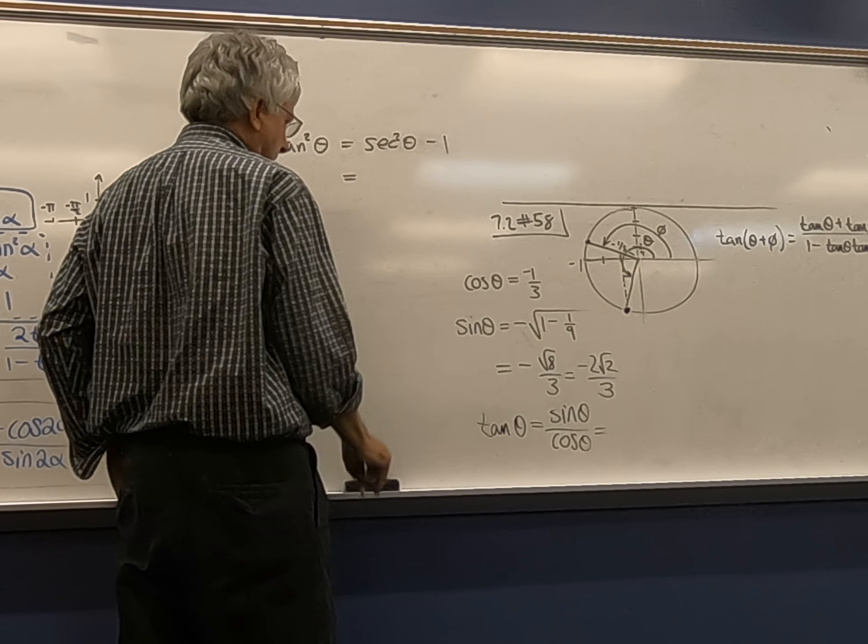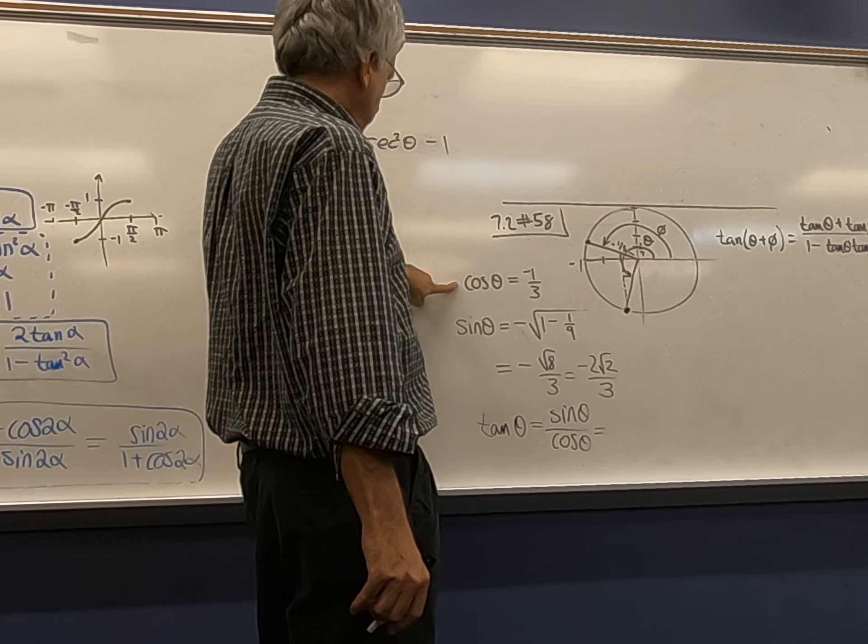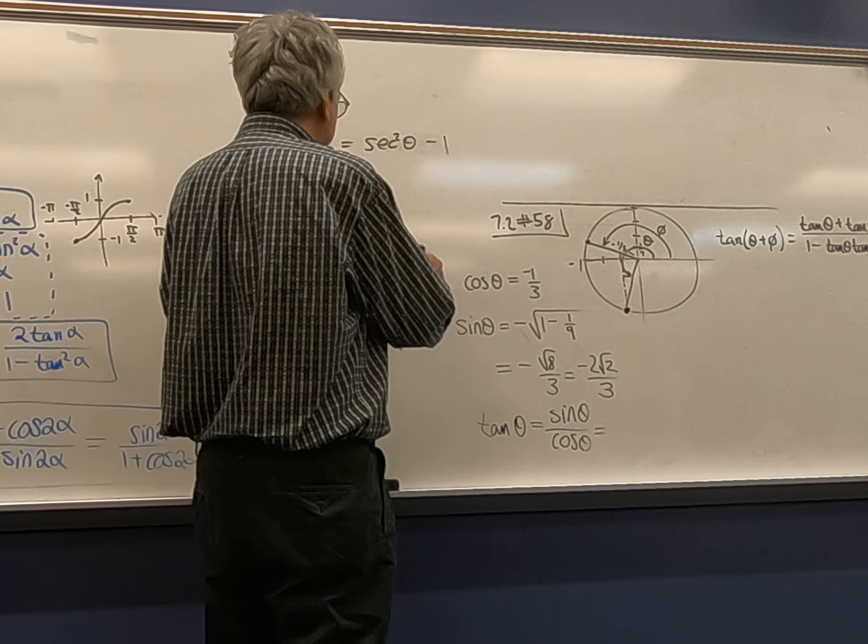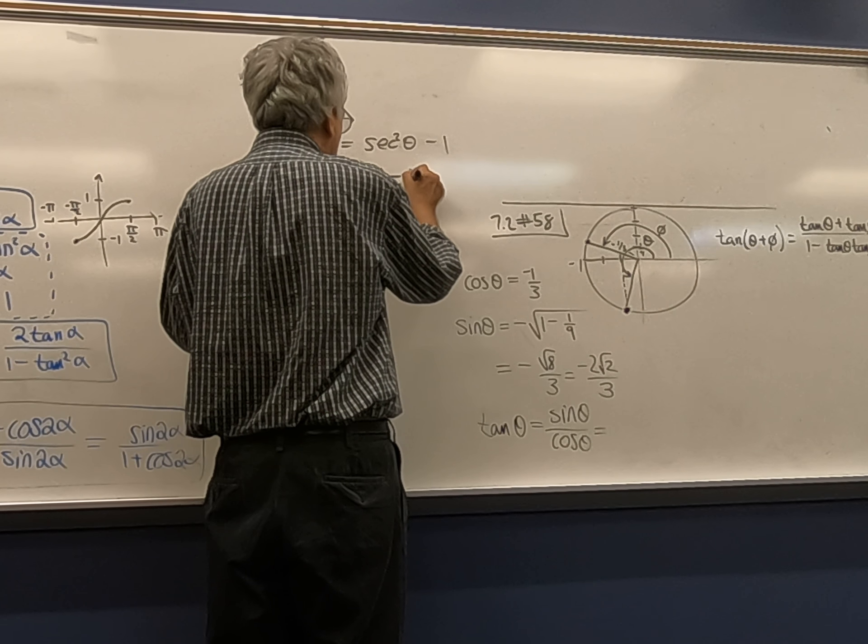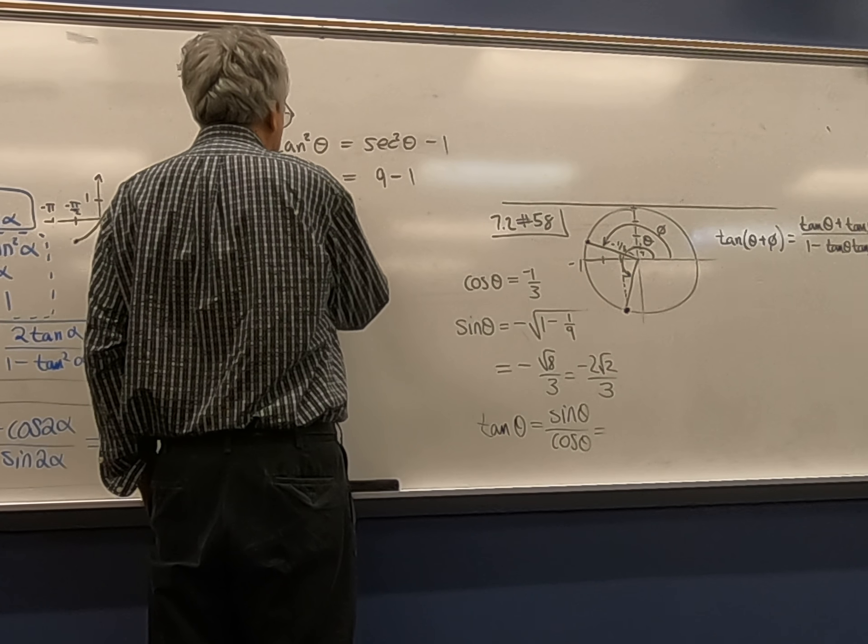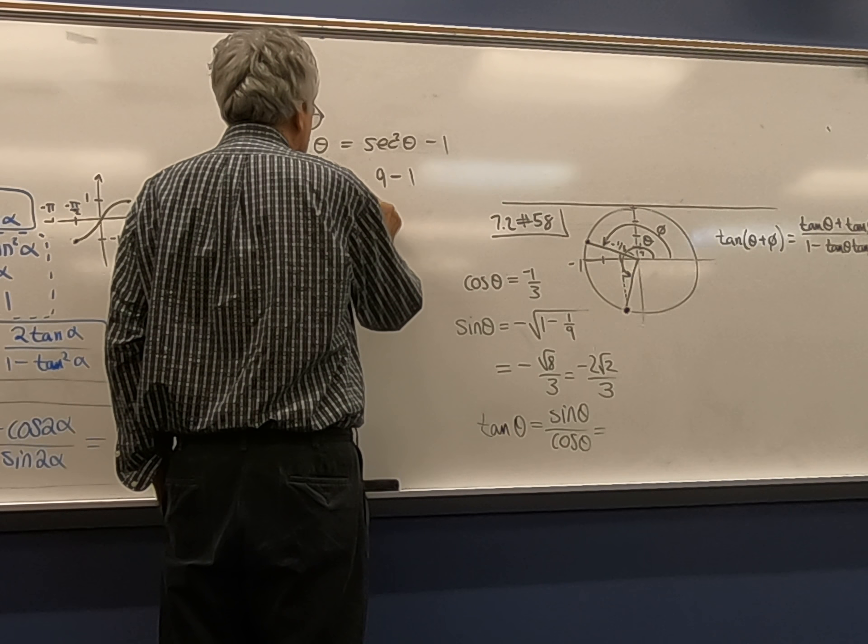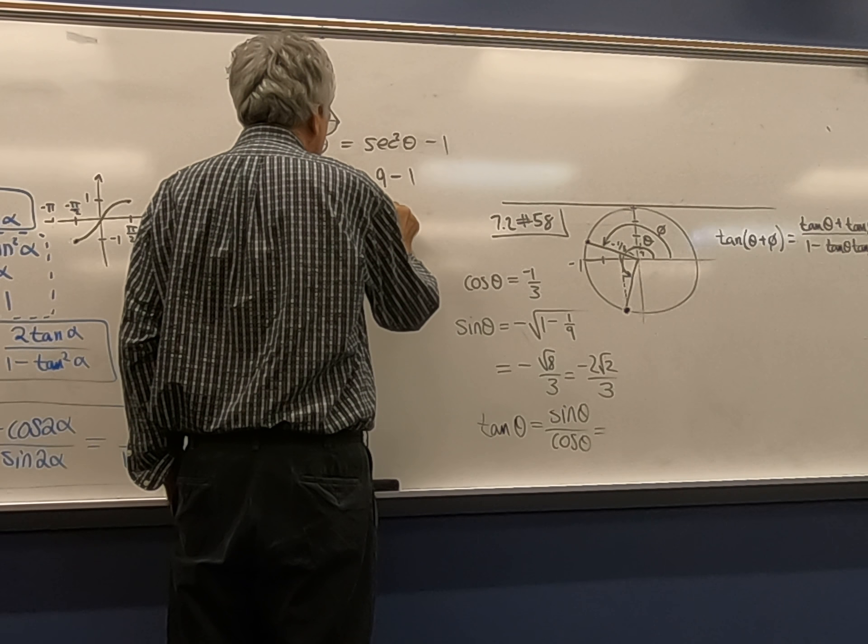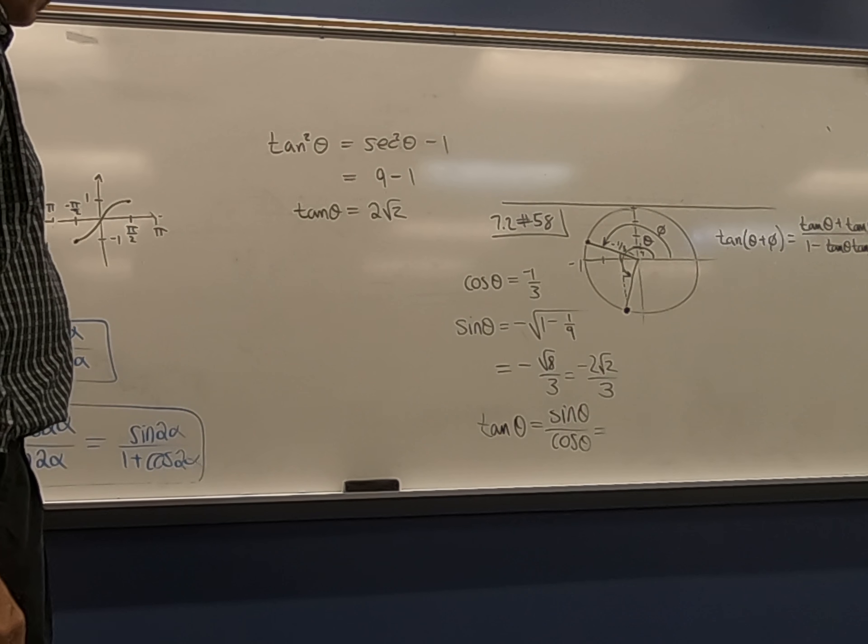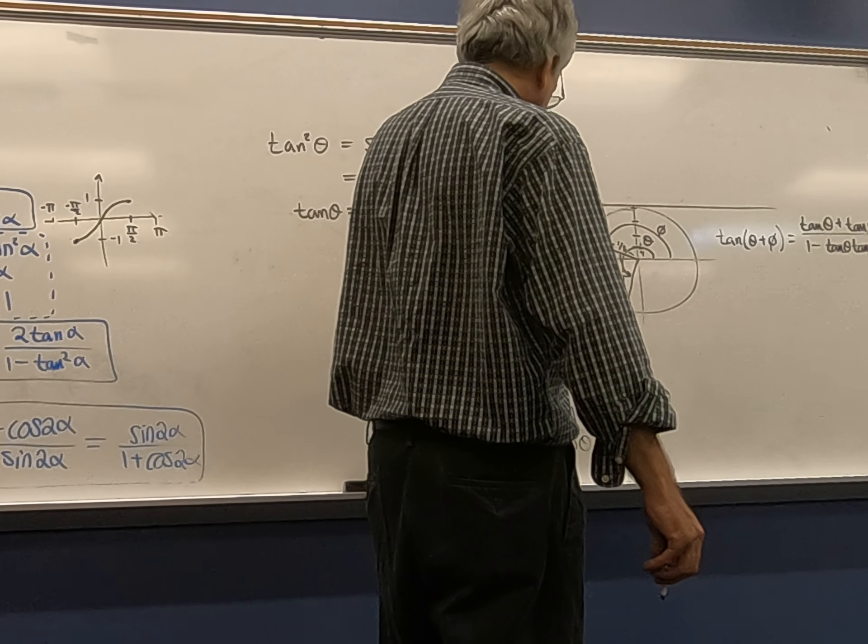And so if I know cosine is one-third, that means that secant is three, right? Or negative three, but I'm going to square it and get nine minus one. So that means that tangent theta is going to be positive two root two. I want the square root of eight, right? Does that work out here? Same thing?